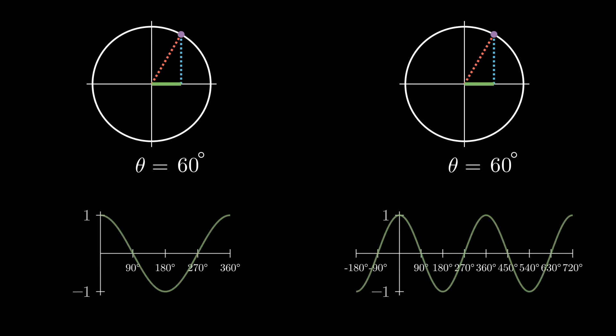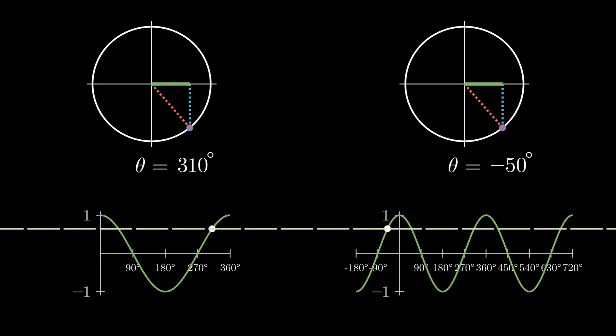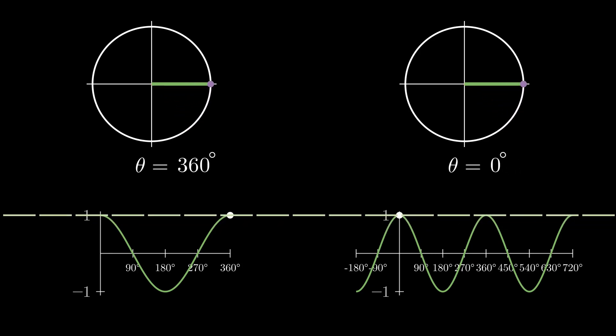Okay, now imagine we keep rotating around the circle. Do we start from 0 degrees or 360 degrees? Or maybe a better way to phrase the question, is rotating 390 degrees the same as rotating 30 degrees around the circle? The short answer is yes, because they end up at the same spot on the unit circle. Which really just means that the side lengths of the triangle would be the same. This also works for negative angles, or rotating clockwise instead of counterclockwise.